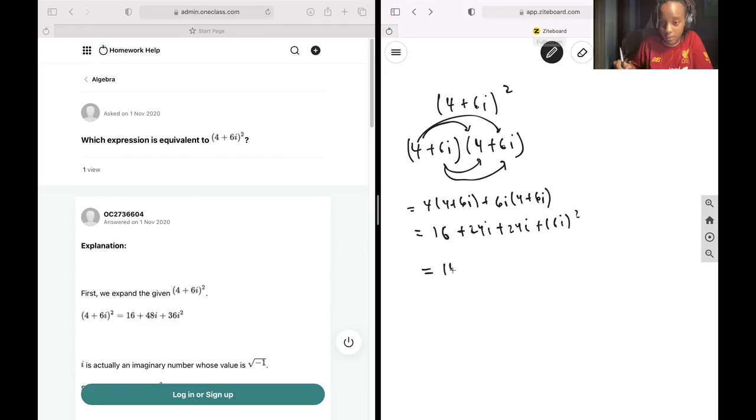So 16 plus 48i plus 36i². Recall i is equal to square root of negative 1. So i² is equal to negative 1.